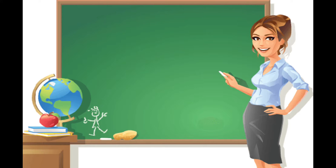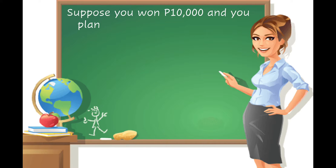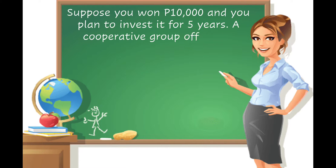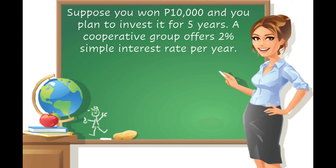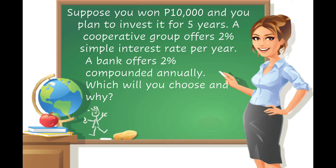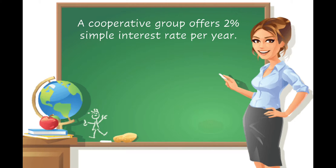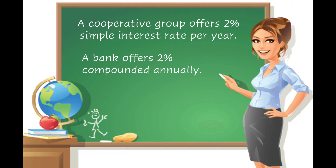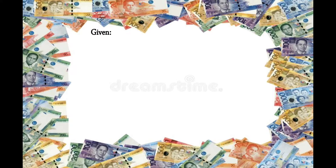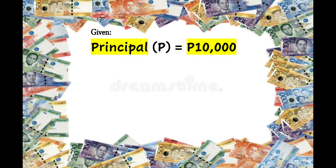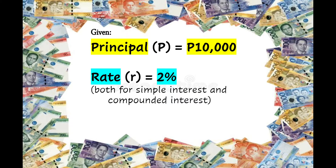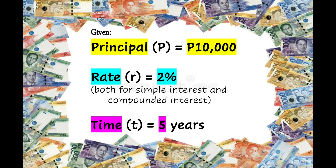Now let's analyze and solve this problem. Suppose you won ₱10,000 and plan to invest it for 5 years. A cooperative group offers 2% simple interest rate per year, and a bank offers 2% compounded annually. Which will you choose and why? The given values are: Principal = ₱10,000, Rate = 2%, Time = 5 years — both for simple and compound interest.